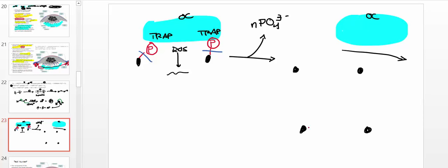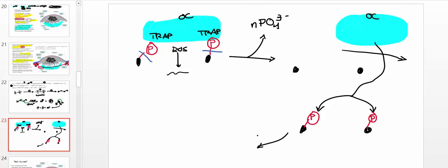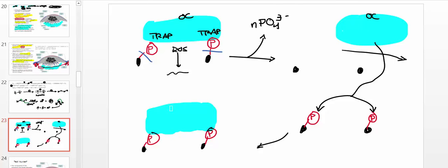The osteoclast then encounters another series of phosphorylated osteopontins, binds to them again via the sealing zone, uses TRAP to generate more ROS, and the cycle repeats. TRAP eventually dephosphorylates osteopontin again, releasing the osteoclast, which moves on to the next set of osteopontins. This cycle repeats until the osteoclast has moved all over the bone and degraded much of it.